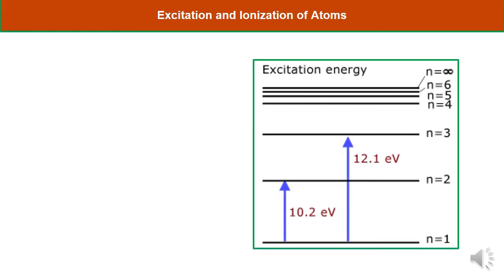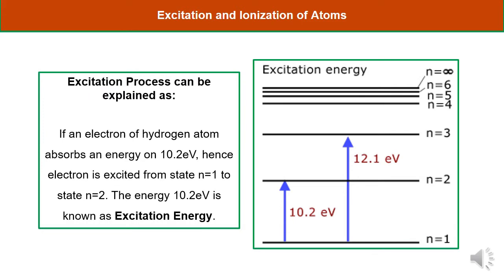In this diagram, you can see energy levels n equals 1, 2, 3, 4, up to infinity. When an electron of the hydrogen atom absorbs 10.2 electron volts of energy, the electron is excited from level n equals 1 to n equals 2. This 10.2 electron volt is known as the excitation energy. Similarly, 12.1 electron volts of energy is required to excite the electron from n equals 1 to n equals 3. So 12.1 electron volt is also known as the excitation energy.